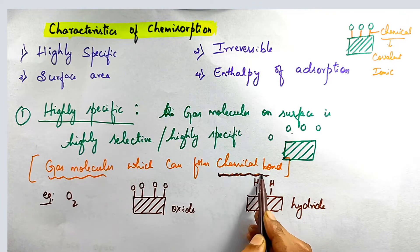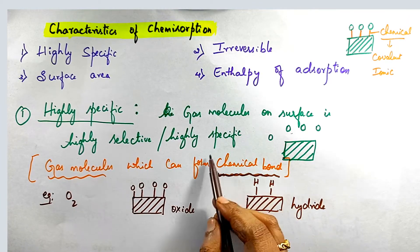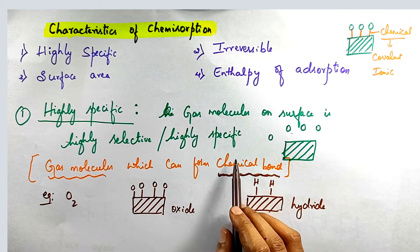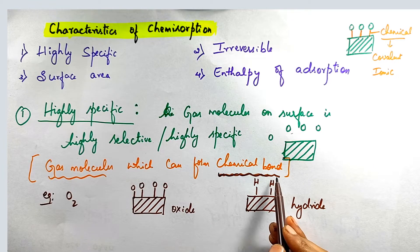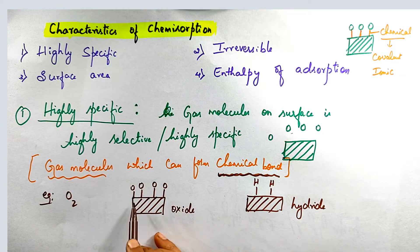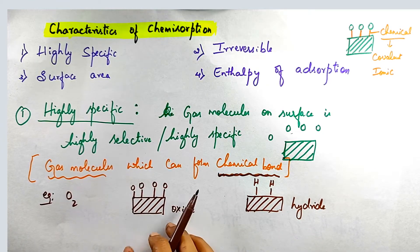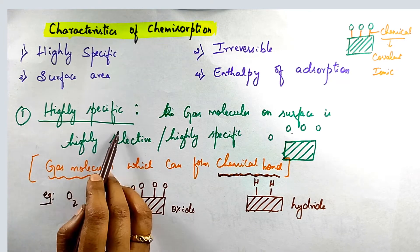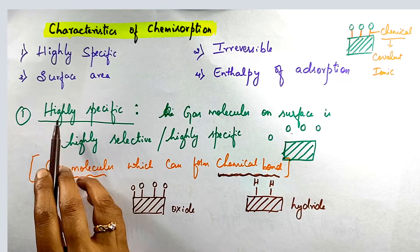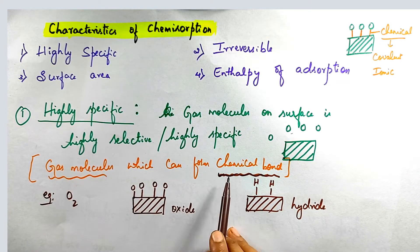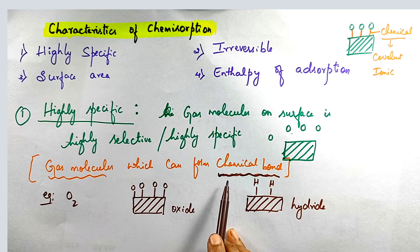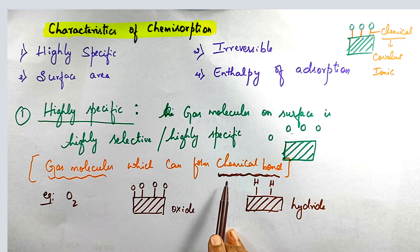The important point is that only gas molecules which can form a chemical bond — that is, covalent or ionic bond — can be adsorbed on the surface. Therefore, chemisorption is highly specific due to chemical bond formation. This is the first characteristic of chemisorption.